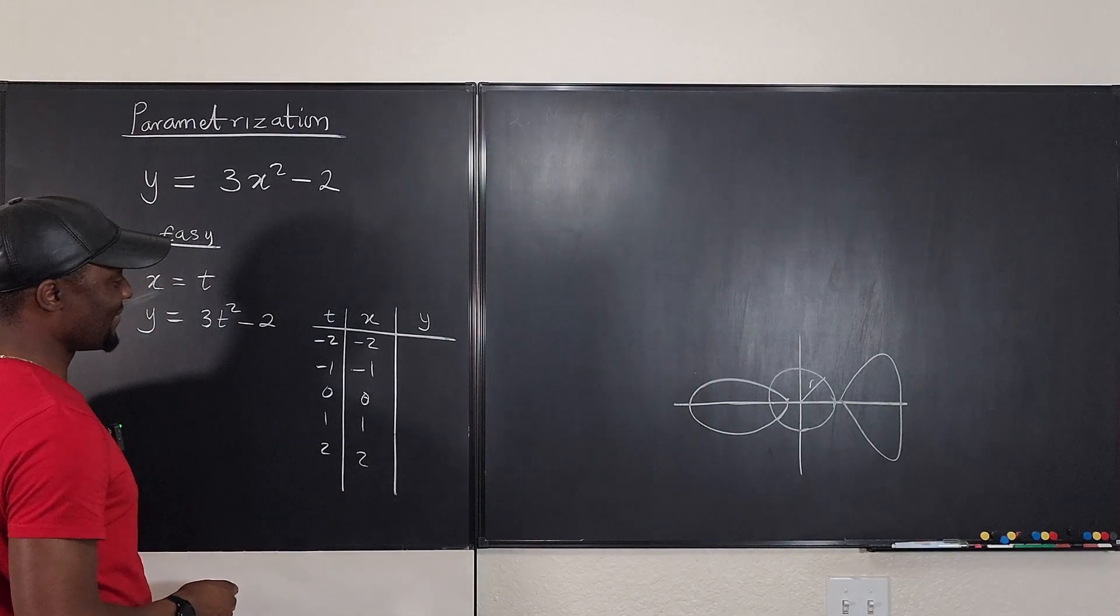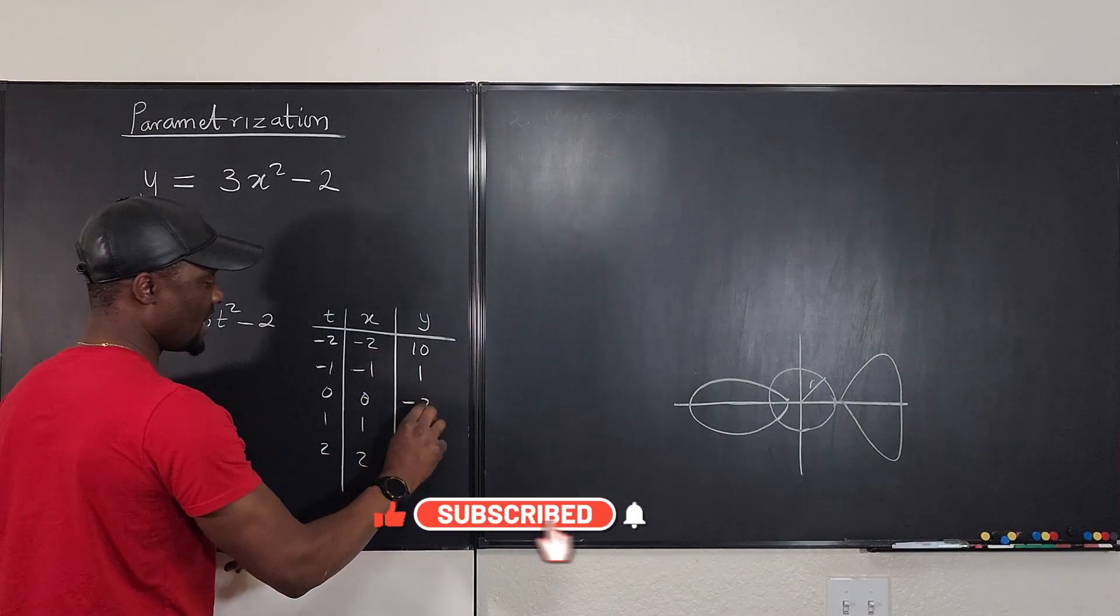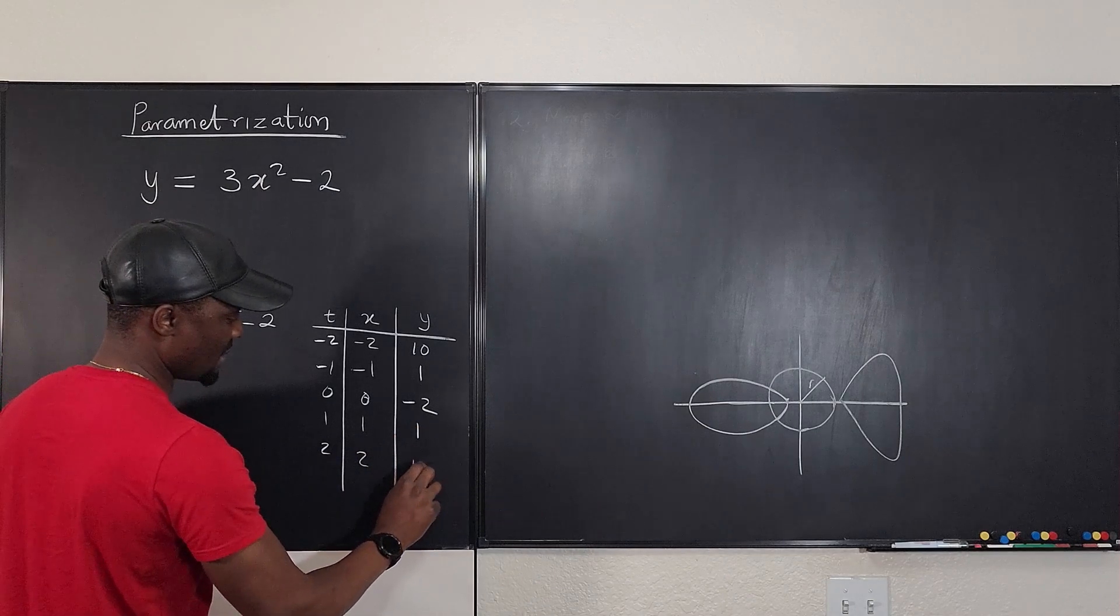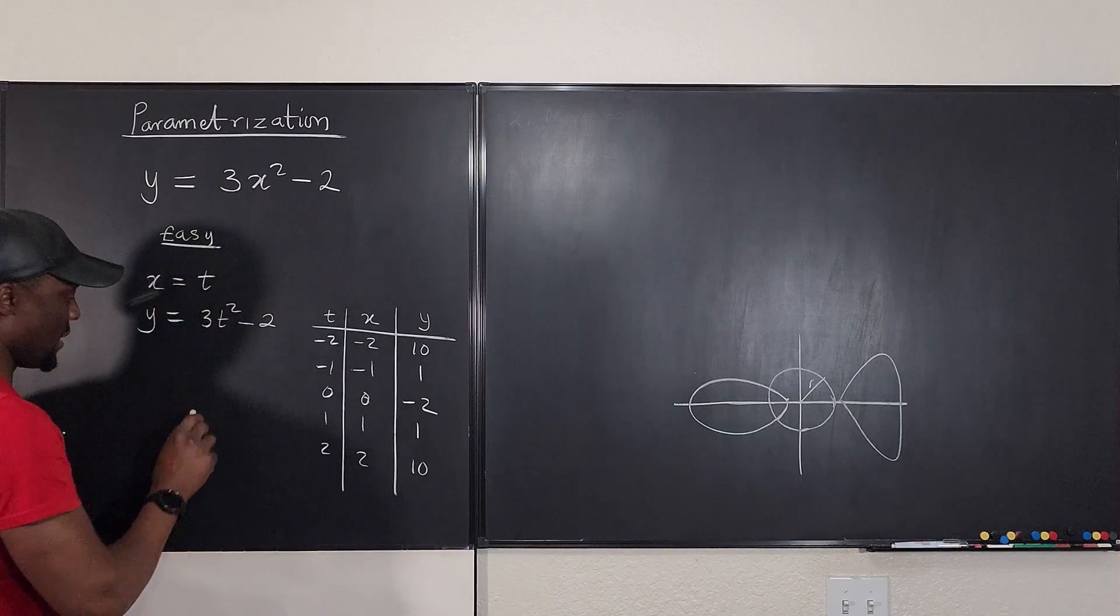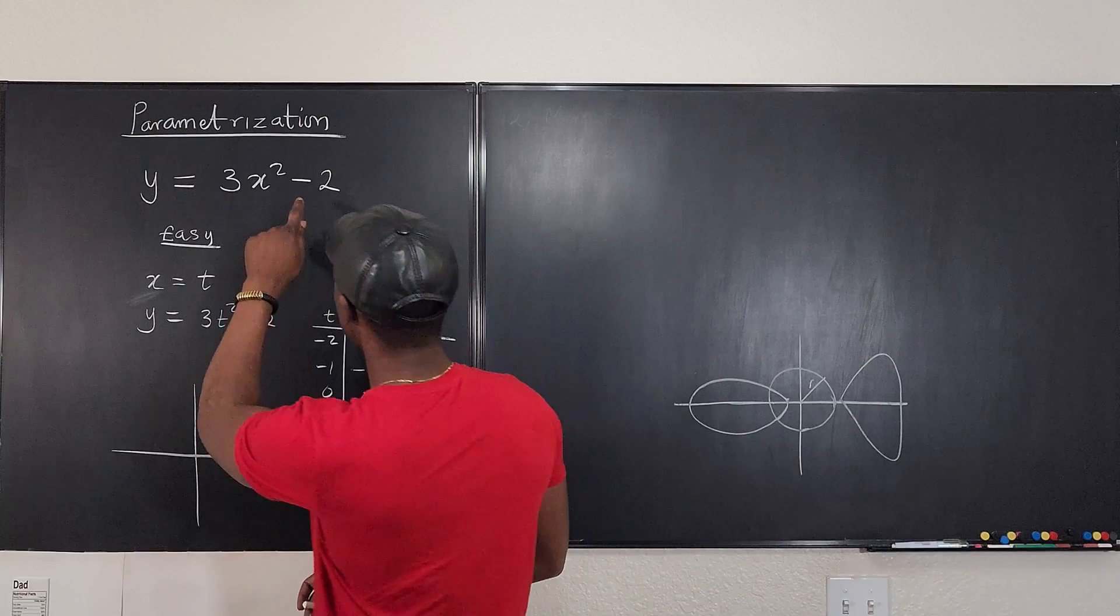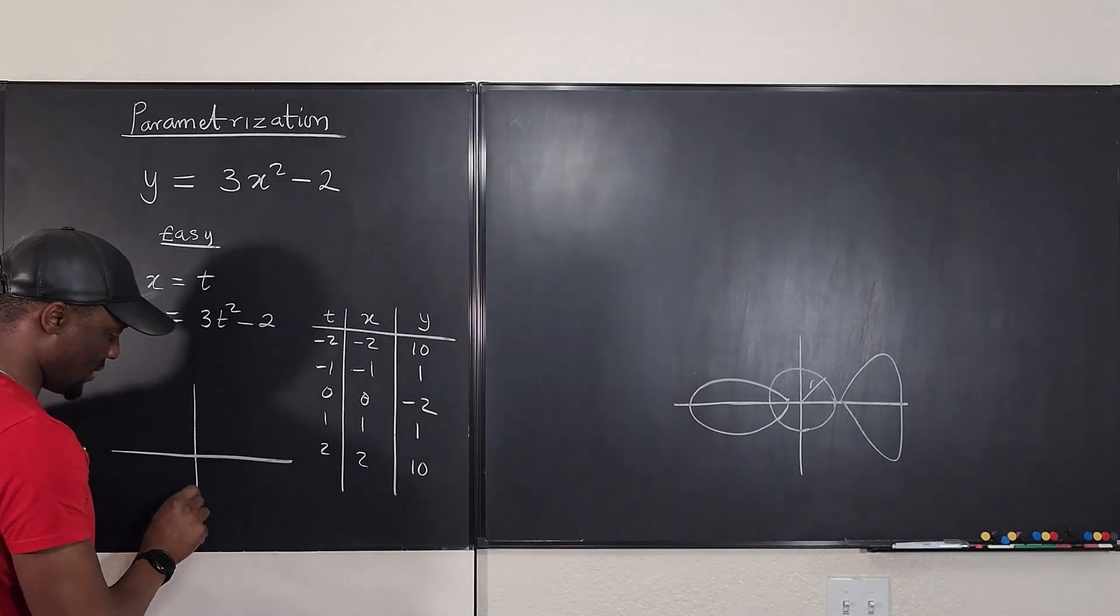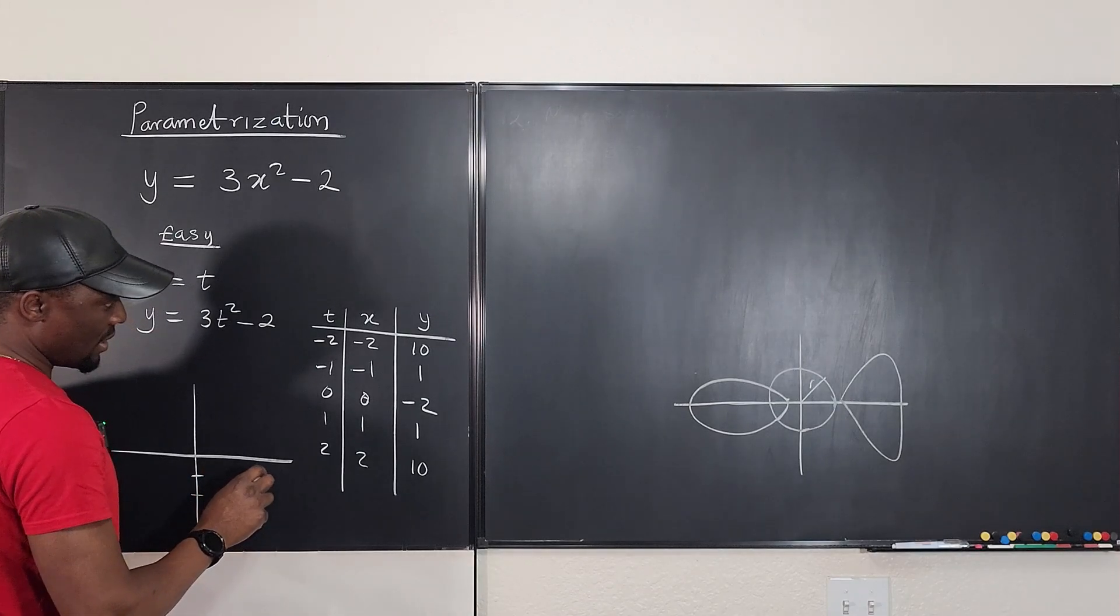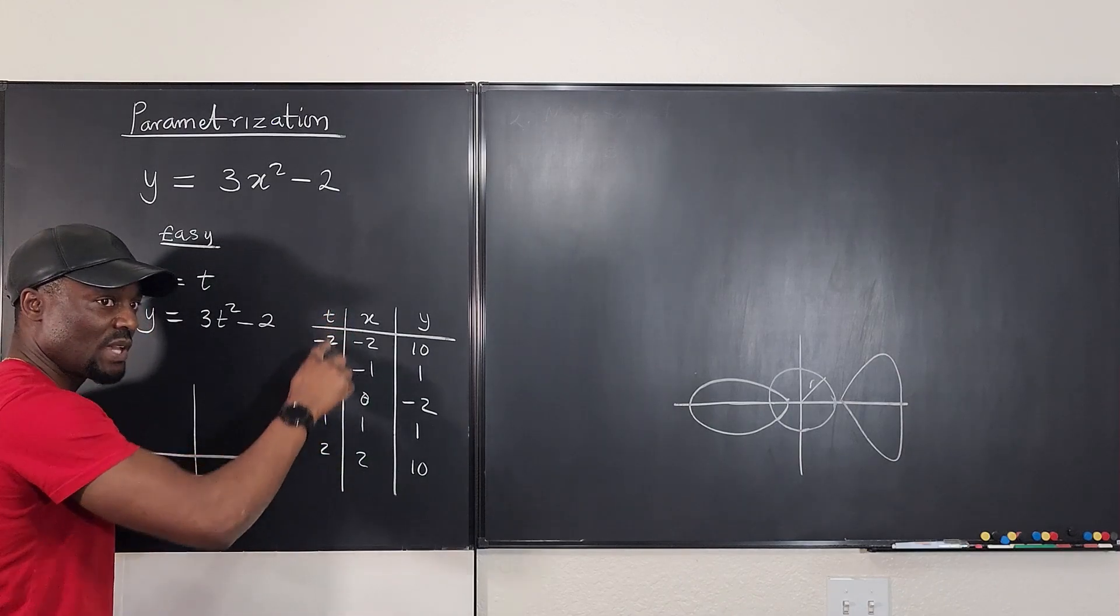And then you plug in the values for negative 2, negative 1, 0, 1, 2. If I plug in 0, I'm going to get negative 2. If I plug in this, it's going to be 1. And this is going to be 10. So you can see that this is a parabola, where the minimum is negative 2, which obviously is here.